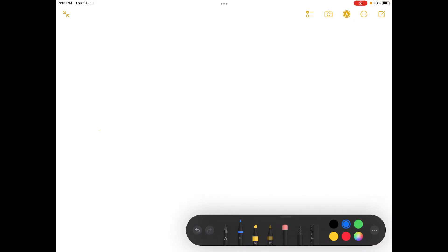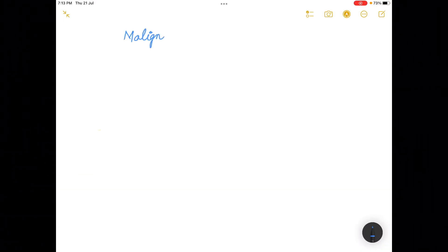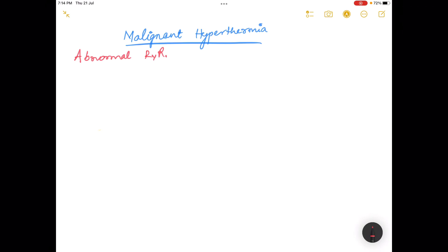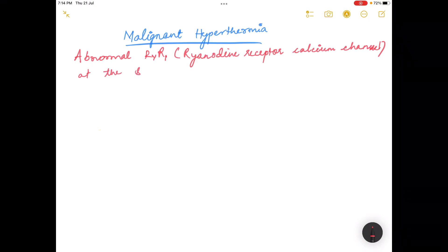Hello friends, today we will be discussing malignant hyperthermia. Many susceptible individuals have an abnormal RYR1 or ryanodine receptor calcium channel. These abnormal RYR1 ryanodine receptor calcium channels are present at the sarcoplasmic reticulum.